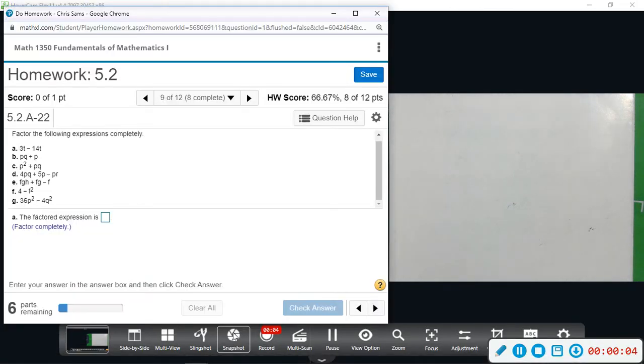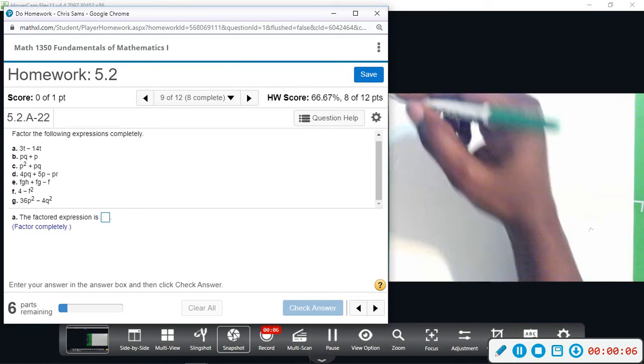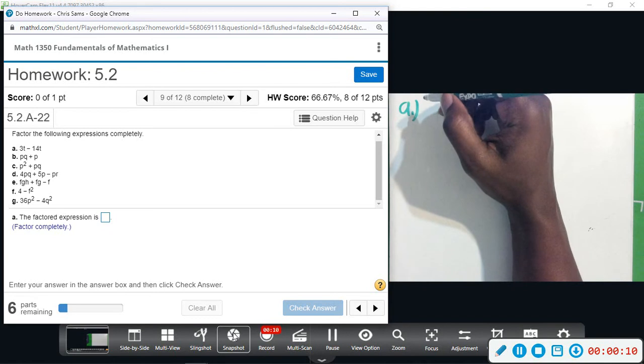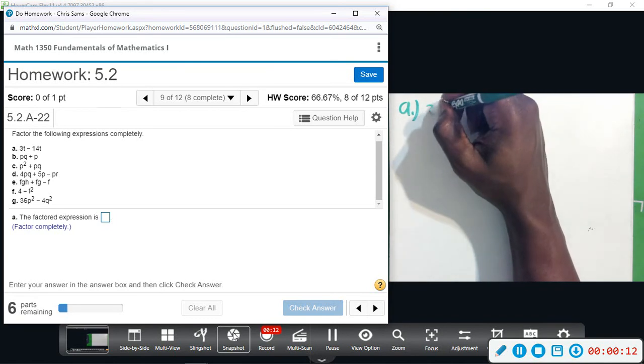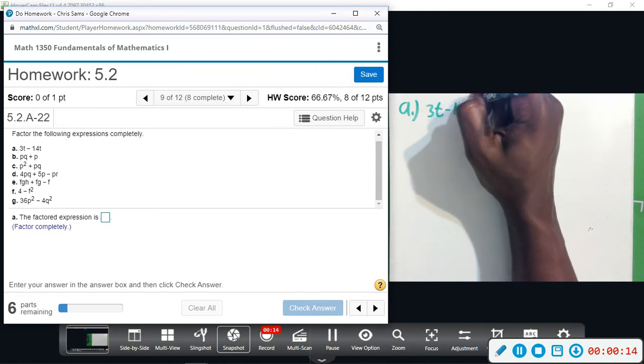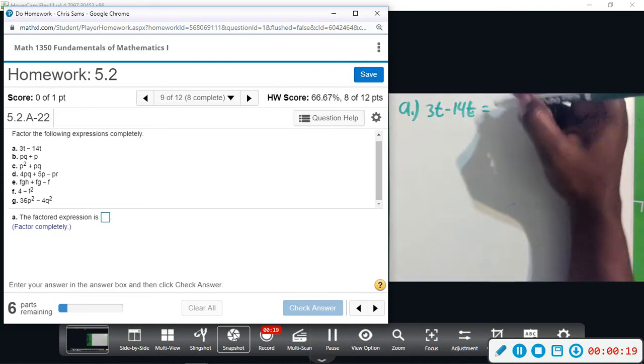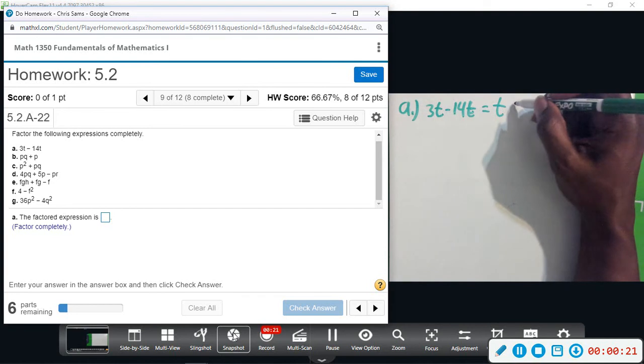Alright, number nine, we want to factor each of these completely. Part a: we have 3t minus 14t. Okay, these both have t in common, so if we pull out a t we will be left with 3 minus 14.